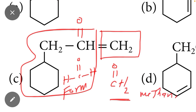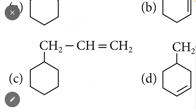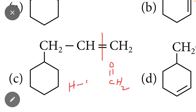The question asks: for which molecule does ozonolysis give a final product containing methanal? Option C is correct because when we do ozonolysis of that molecule, one product is CH₂=O, meaning methanal (formaldehyde). In this way we can identify the final product.